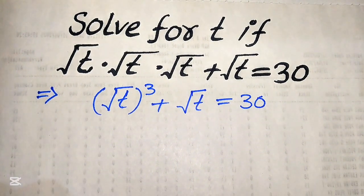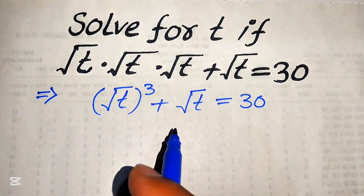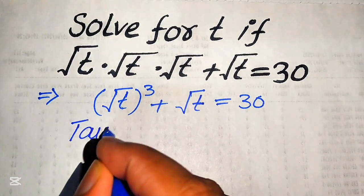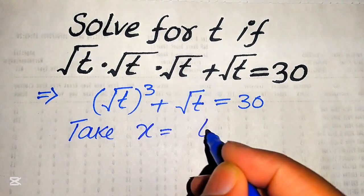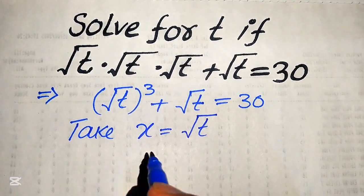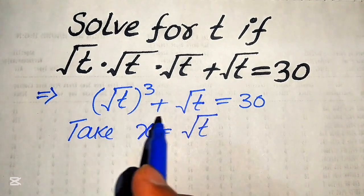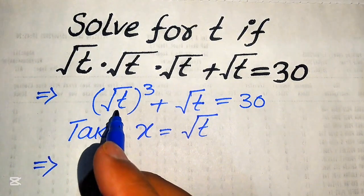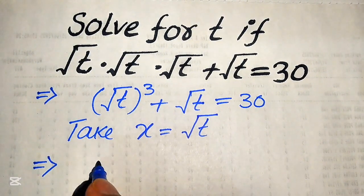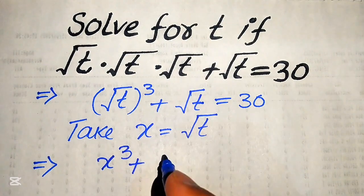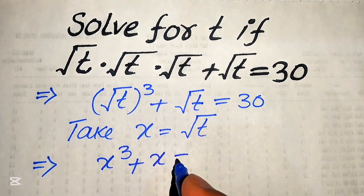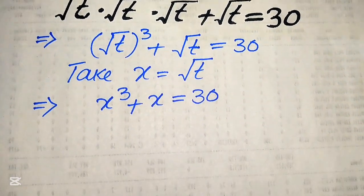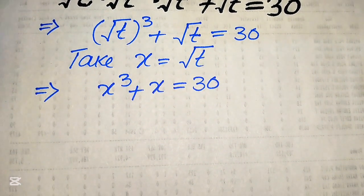Now the very first step: you see here that square root of t is multiplied three times, and we know that if any number is multiplied three times we write it in cubic form. So this will be written as (t · √t) cubed, plus square root of t, equals 30. In the next step we need to convert this radical equation into cubic form. We take x equals square root of t, and our equation is written as x cubed plus x equals 30.